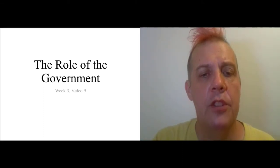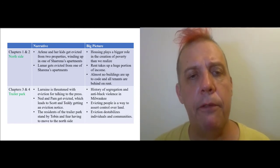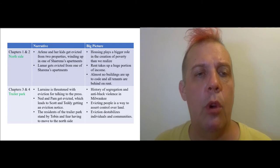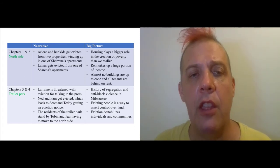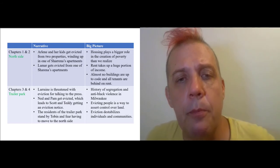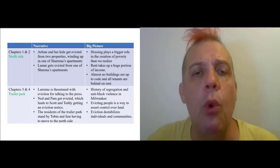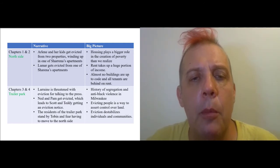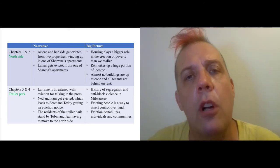Alright, so to review, we've got a narrative of some different families, and we've got information about the big picture. Chapters 1 and 2 were on the north side, where we see Arlene get evicted twice and then winding up in one of Sharina's apartments, and then Lamar actually being evicted from one of Sharina's apartments. And we learned about the role of housing, and the basic thesis that housing plays a bigger role in the creation of poverty than we realize. We see how rent takes up a huge portion of people's income. And there's also this background fact that basically none of the buildings that we're dealing with are up to code, and all of the tenants are behind on rent.